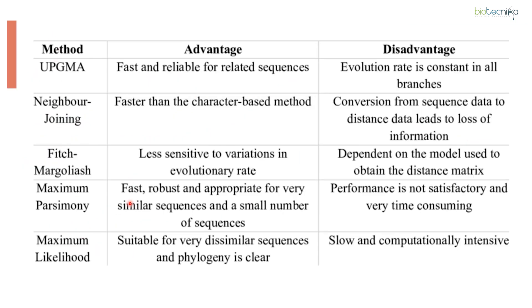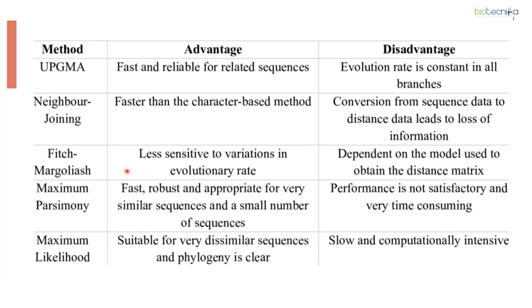These different methods each have advantages and disadvantages. The UPGMA method is fast and reliable and helps find related sequences; however, the disadvantage is that it assumes a constant evolutionary rate across all branches. Neighbor joining is faster than character-based methods. Methods such as maximum parsimony and the Fitch method are fast, robust, and provide more clarity with respect to similar sequences, giving deeper insights into patterns of phylogenetic analysis.